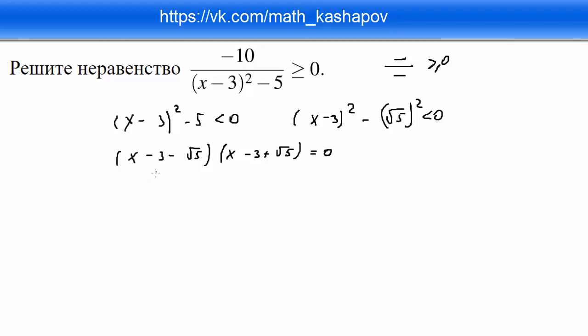И когда оно равно 0? Когда один из множителей равен 0, то есть или первая скобка, или вторая. Приравниваем к 0, решаем: x минус 3 минус корень из 5 равно 0. Отсюда x у нас получается равен 3 плюс корень из 5.